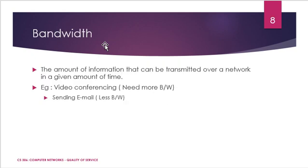The last characteristic is bandwidth. Bandwidth is the amount of information that can be transmitted over a network in a given amount of time. For video conferencing, we need more bandwidth because the pixel rate is high and video must be sent at a high bandwidth rate. For sending emails, we need only less bandwidth. We must allocate bandwidth based on the purpose — high-need applications like video conferencing require more, while email requires less.